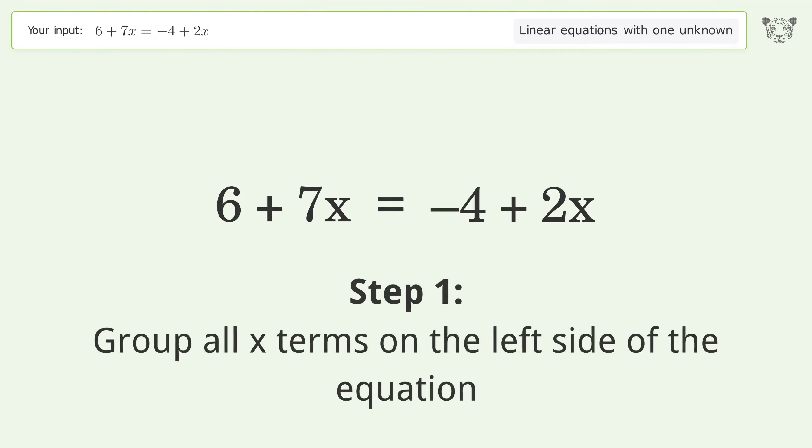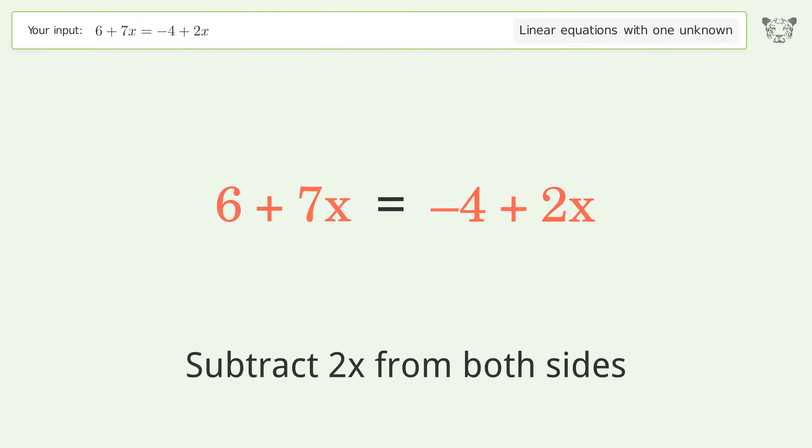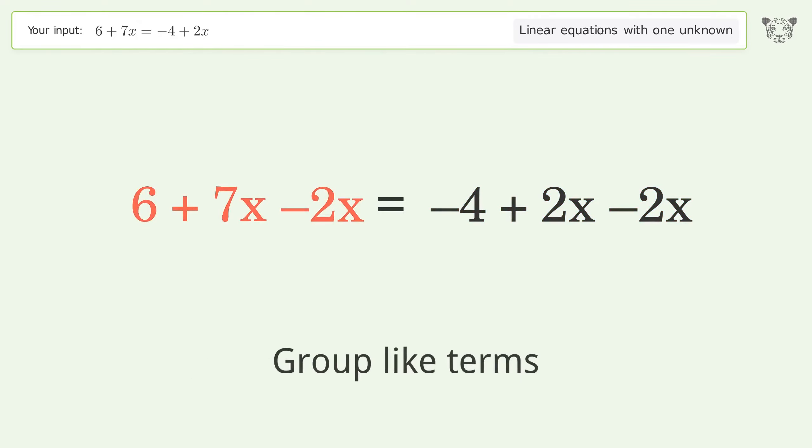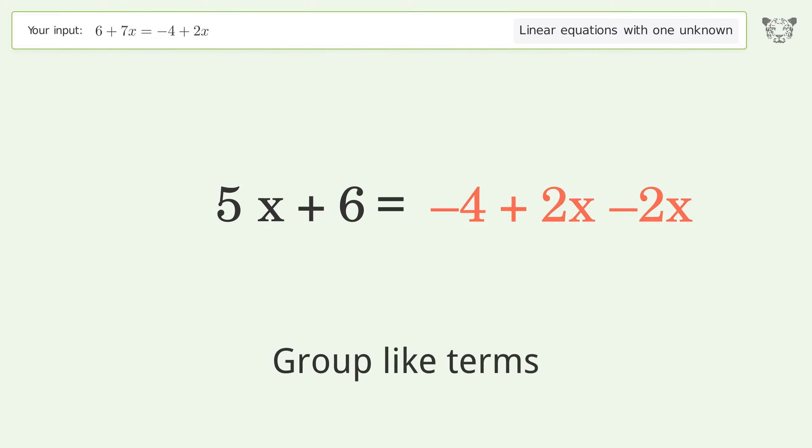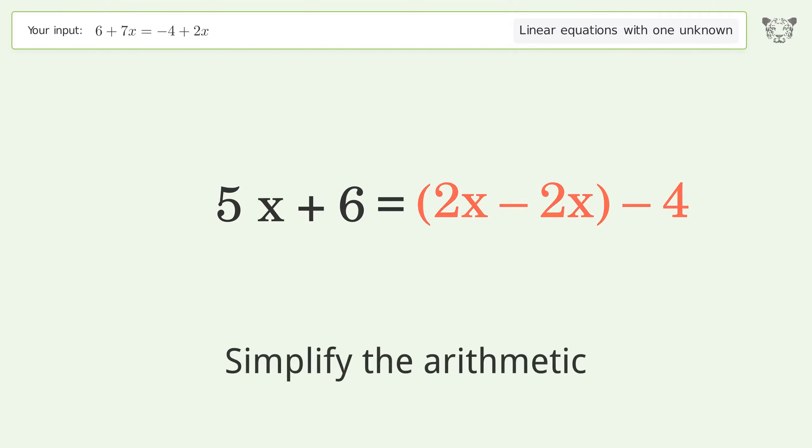Step 1: Group all x terms on the left side of the equation. Subtract 2x from both sides. Group like terms and simplify the arithmetic.